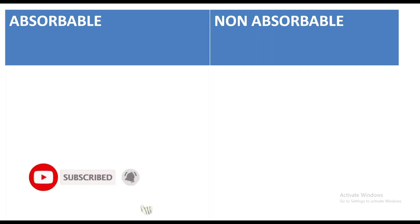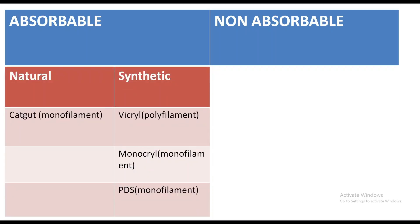In the absorbable and non-absorbable classification, there is further subdivision. Absorbable natural is catgut, which is monofilament. Absorbable synthetic includes vicryl, which is polyfilament, and also monofilament absorbable synthetic examples.